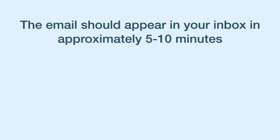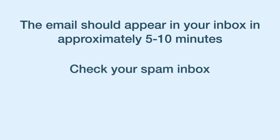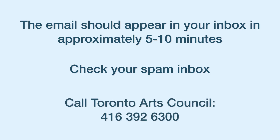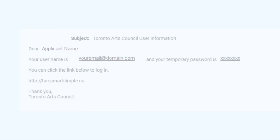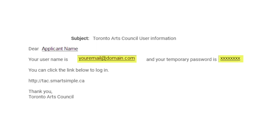The email should appear in your inbox in approximately 5–10 minutes. If you didn't receive an email, check your spam inbox. If you still haven't received an email, call Toronto Arts Council at 416-392-6300. After you have received your login credentials via email, you can now log in to the system using your email address as the username and the password provided in the email. You will be asked to set a new password to replace the system generated password.